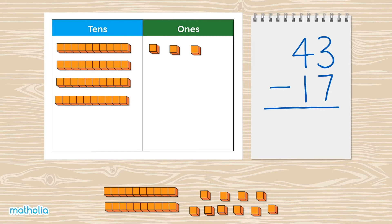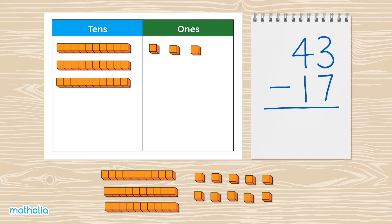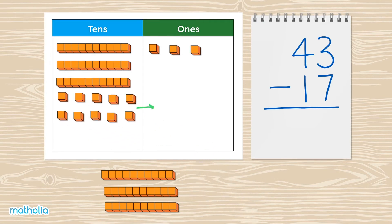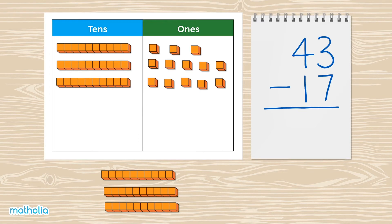We can subtract by taking away blocks. Let's start with the ones. Hmm, we can't take away seven ones from three ones. Let's change one of our ten blocks for ten one blocks. Move them into the ones column. We now